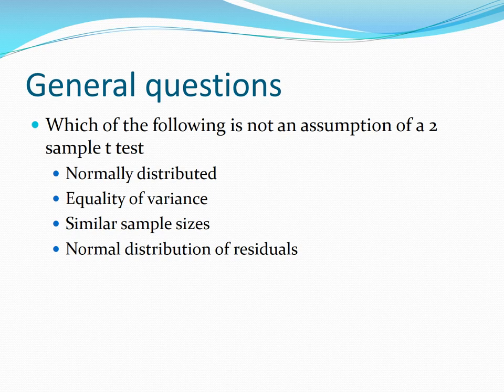Which of the following is not an assumption of a two-sample T-test? We've got four options. The one jumping out straight away is the residuals — we look at residuals as important diagnostics in ANOVA and regression, but not really in a T-test. We do need both samples to be normally distributed, and we need to know if variances are equal or not — we can do an equal variances T-test or Welch's T-test with unequal variances. Similar sample sizes are quite important in a two-sample T-test as well, because that affects the power.